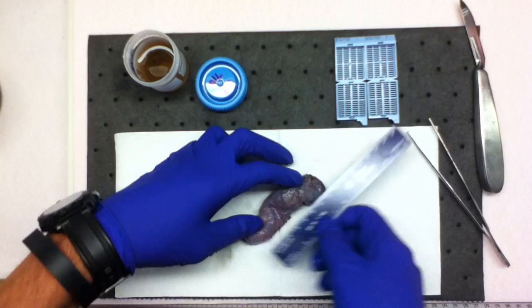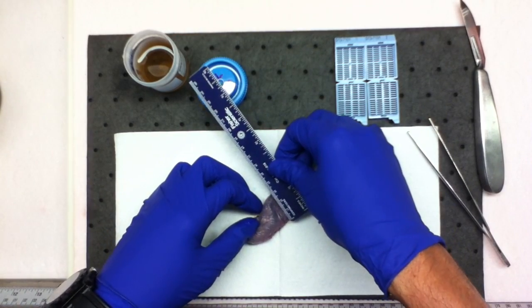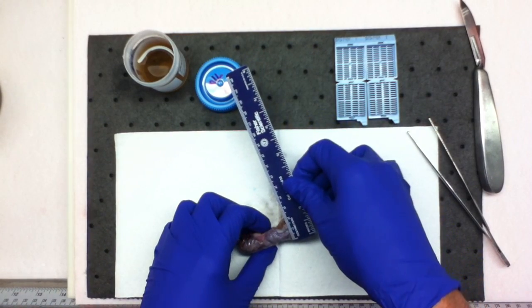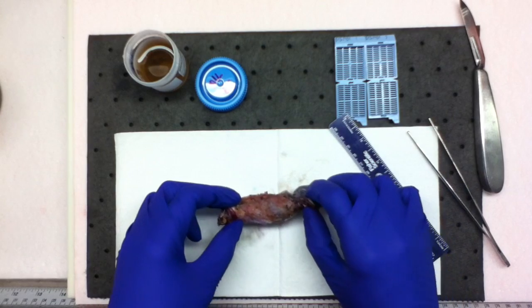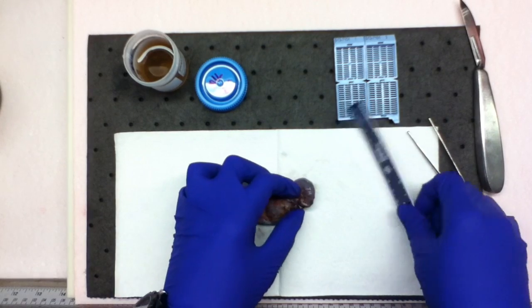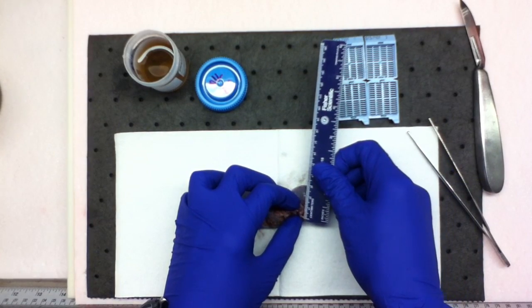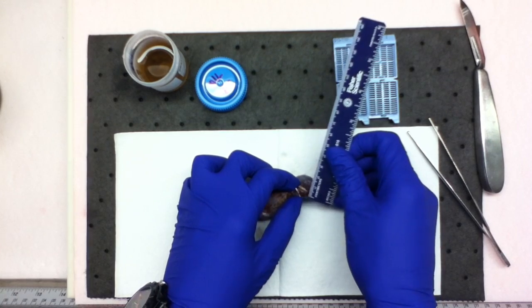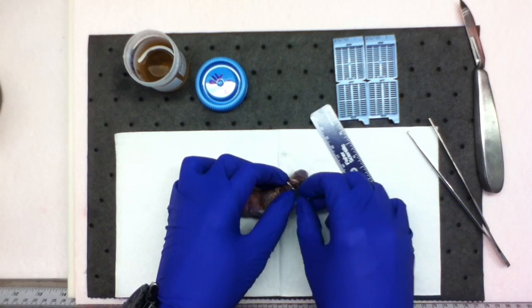It consists of a 9.2 x 3.1 x 2.2 cm intact gallbladder displaying a 0.4 x 0.4 x 0.2 cm attached clamp.